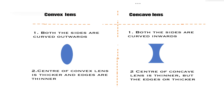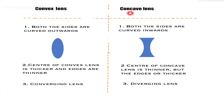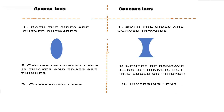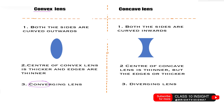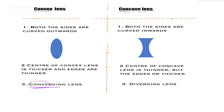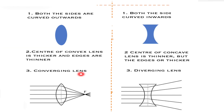Coming to the next point. The convex lens is called a converging lens, whereas the concave lens is called a diverging lens. There is a trick to remember: see the spelling C-O-N-V-E — convex and converging both start with the same letters. Hence, convex lens is converging and concave lens is diverging.